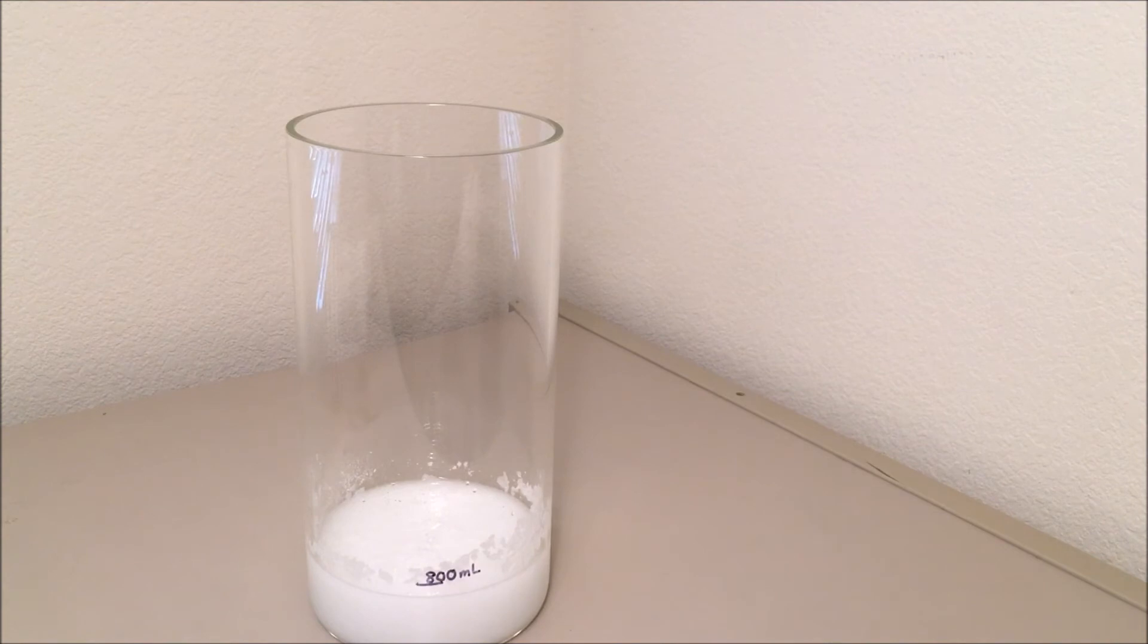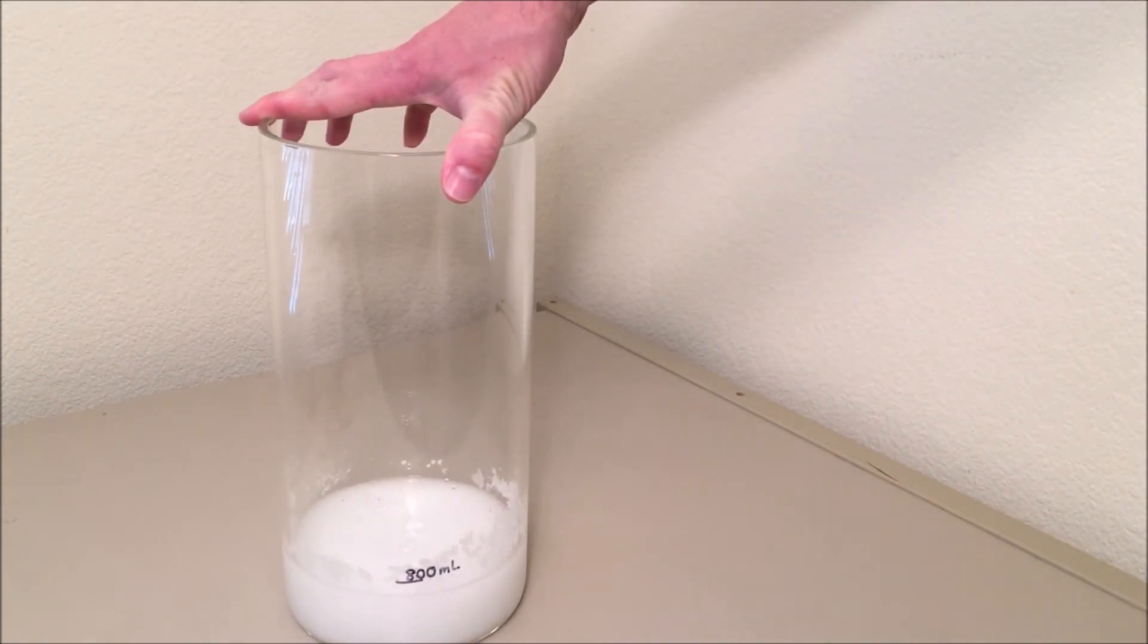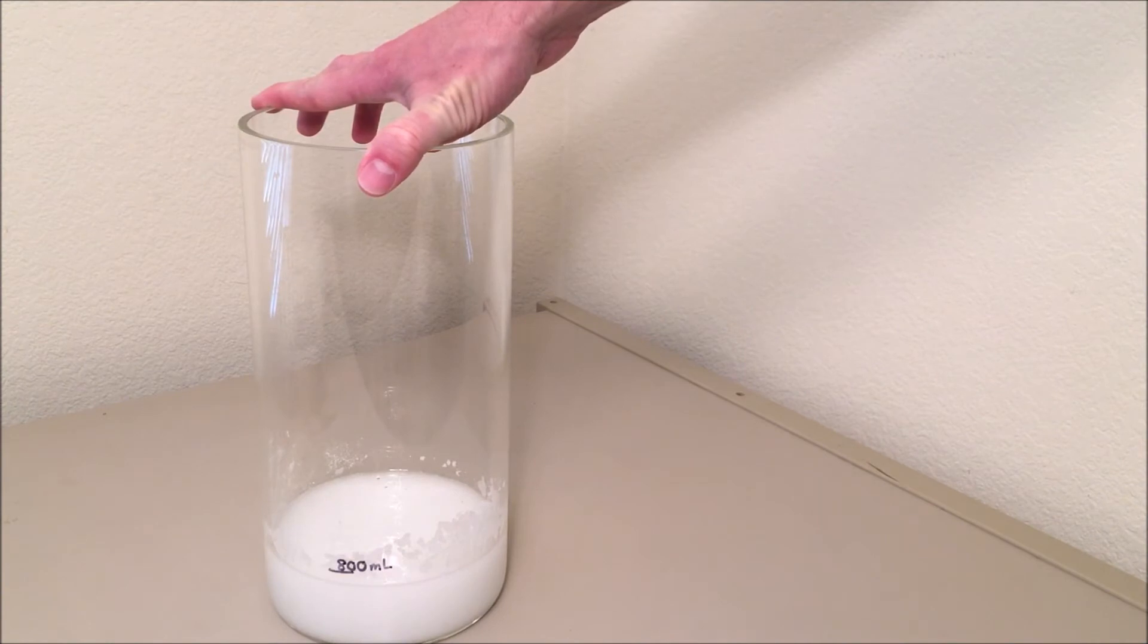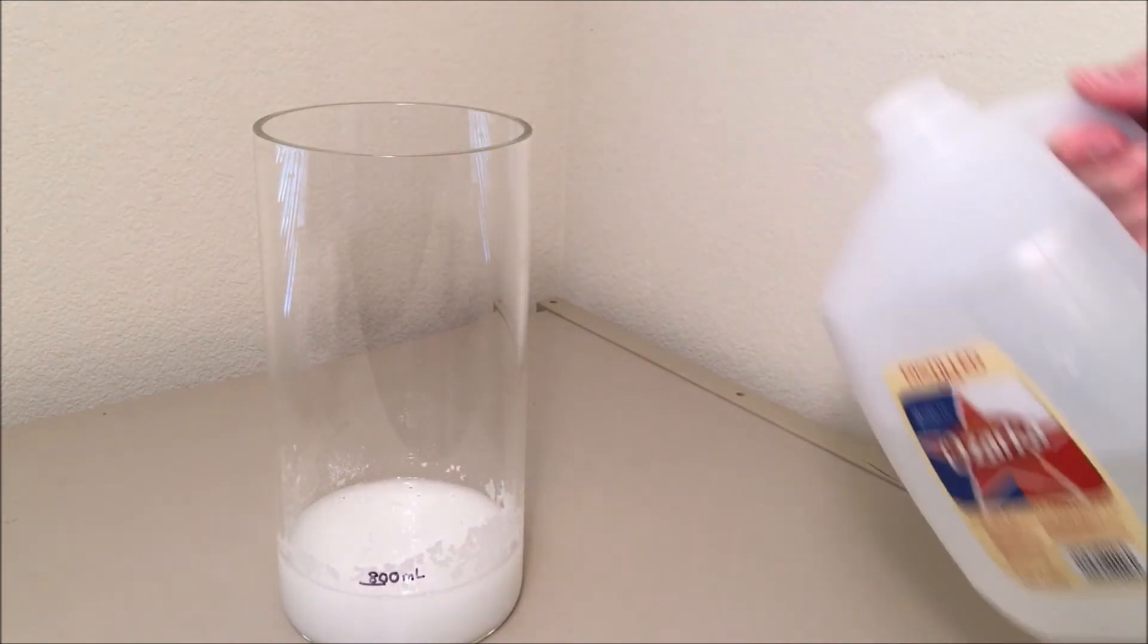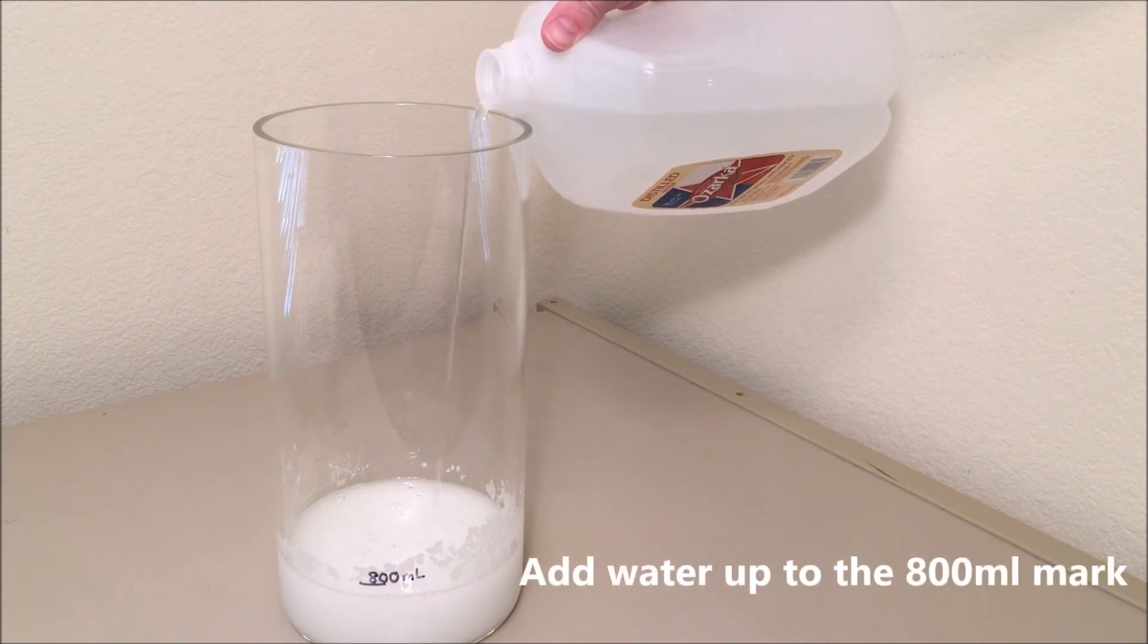So after mixing it a little bit, the magnesium chloride is starting to be a little bit dissolved inside the water so you can add some more water until it reaches the 800 milliliter mark.